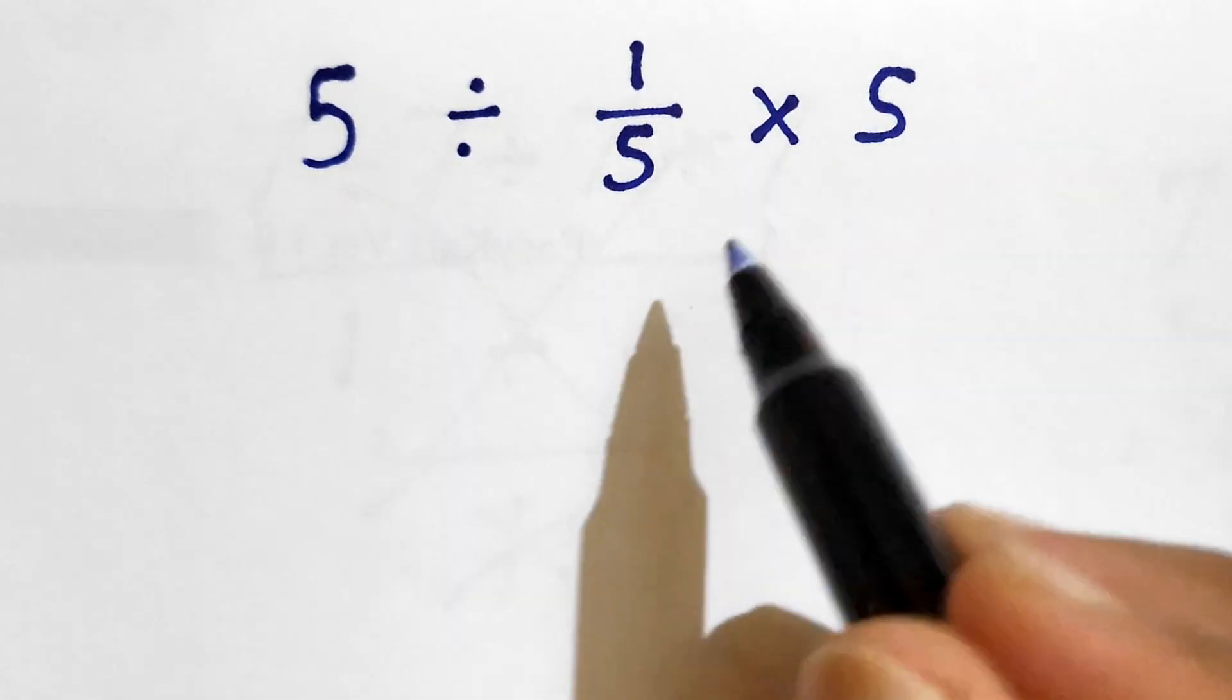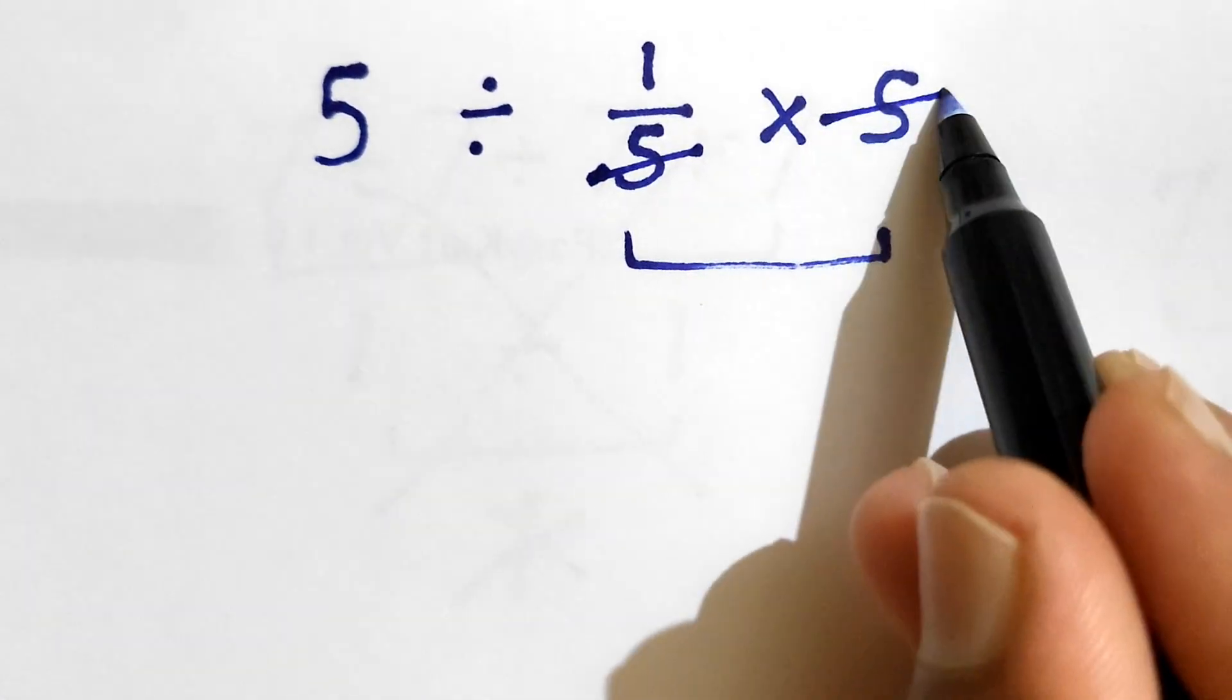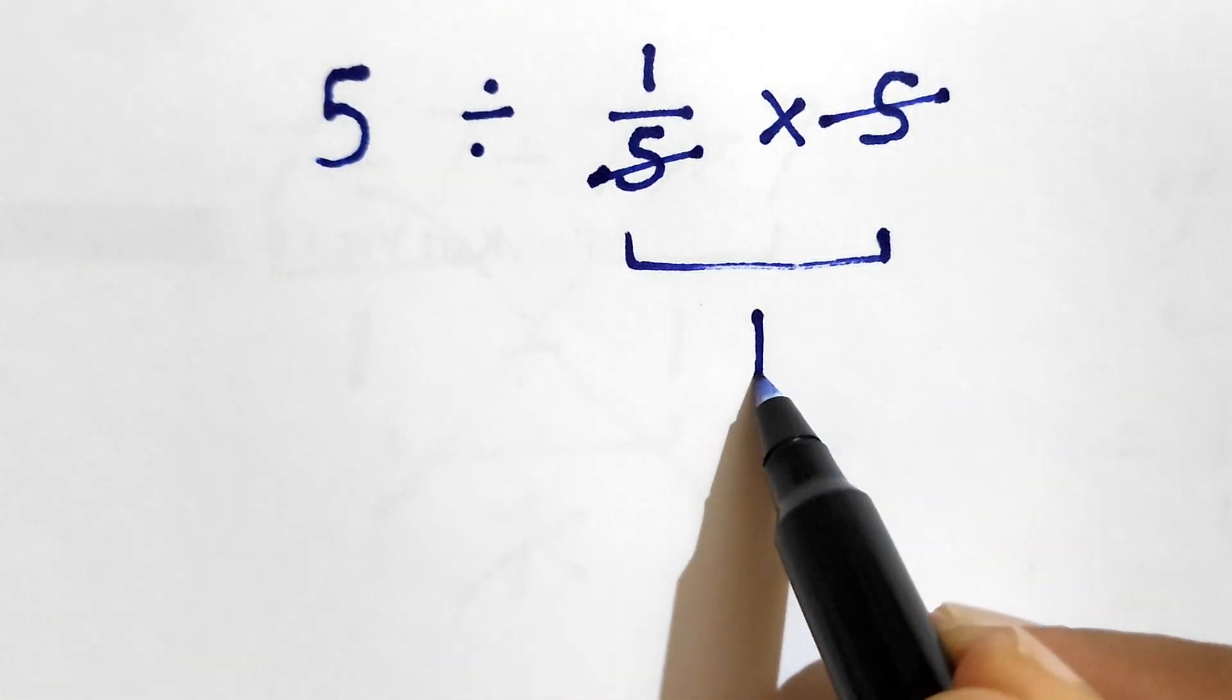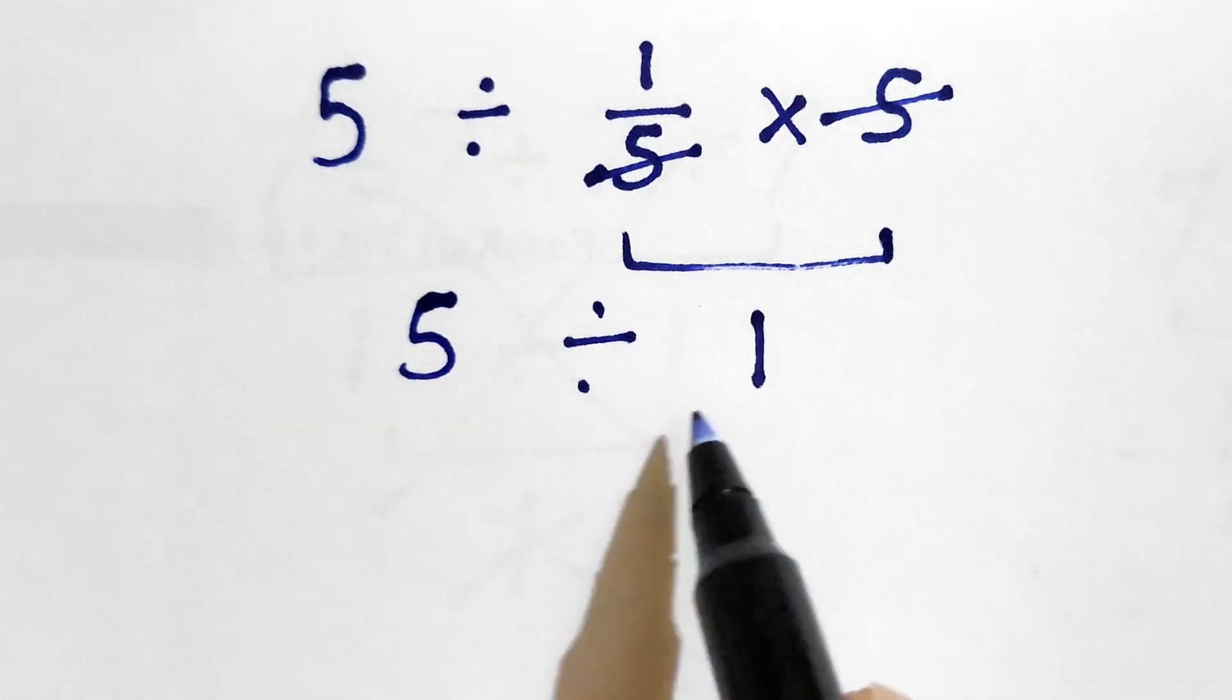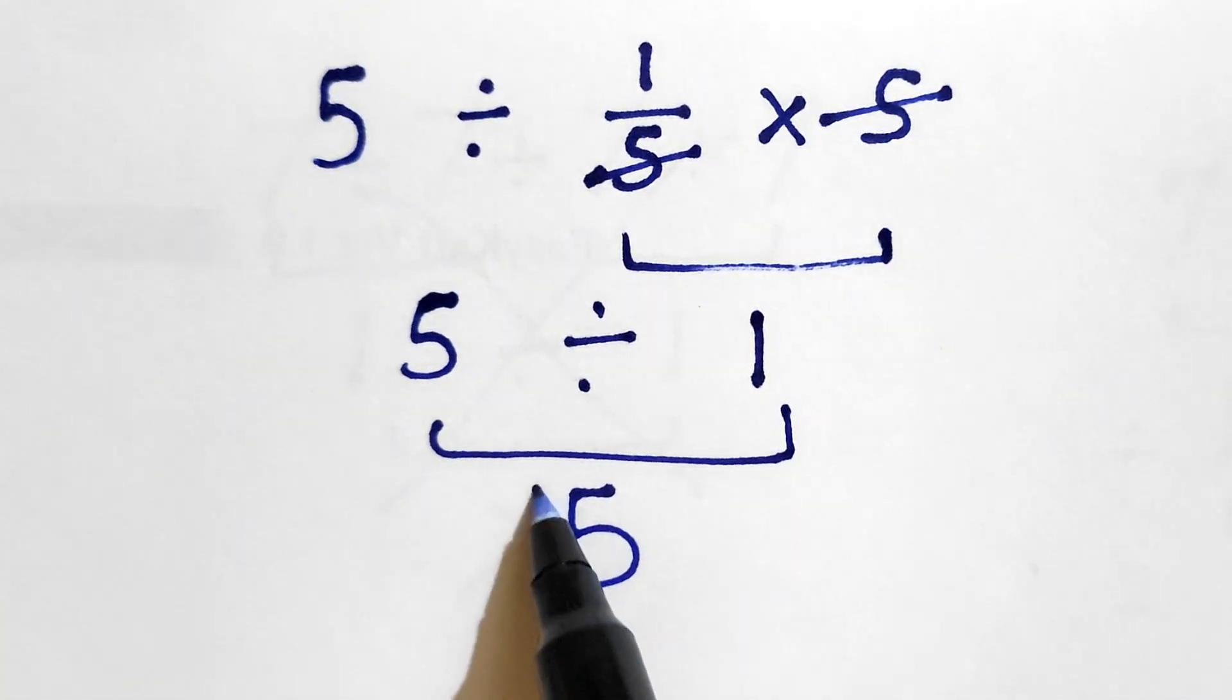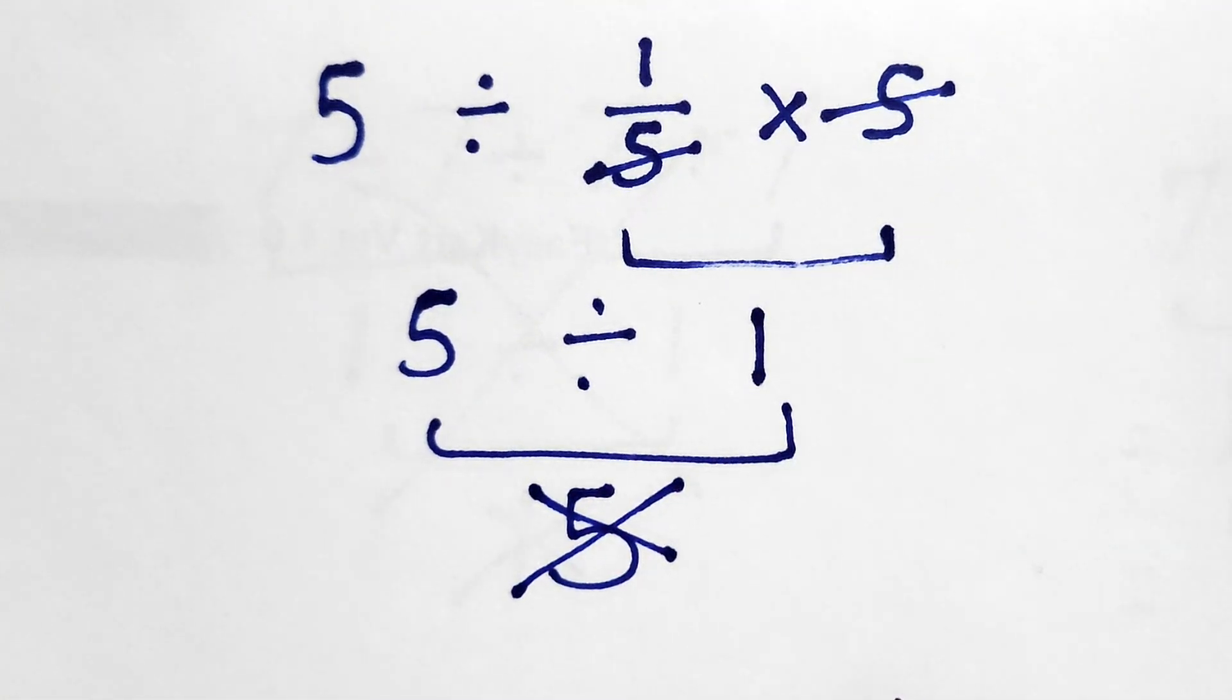1 over 5 times 5 can be solved as you can simply cancel this 5 and this 5 because there is multiplication, and we are only left with 1. Now we have 5 divided by 1, it gives us simply 5. But this answer is not correct because we have not followed the order of operations. Let's see how we can solve this in proper manner.